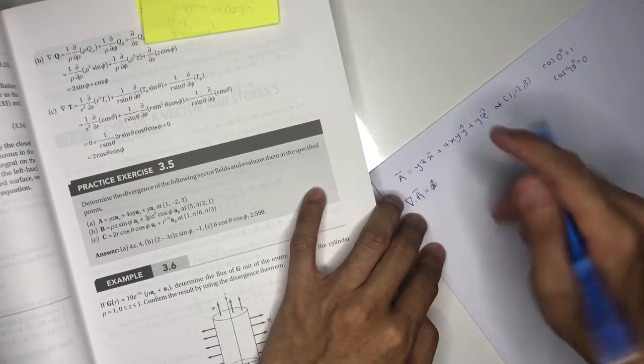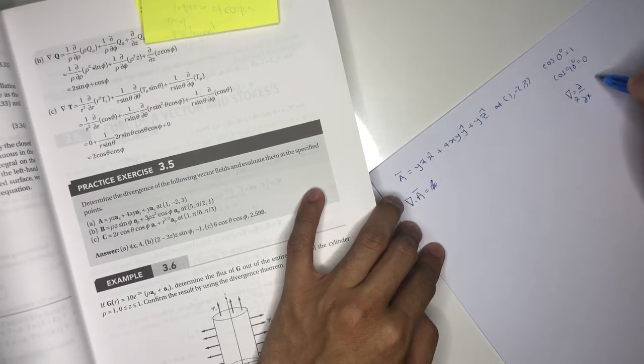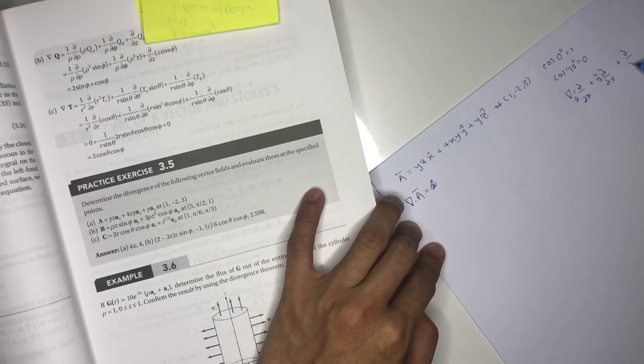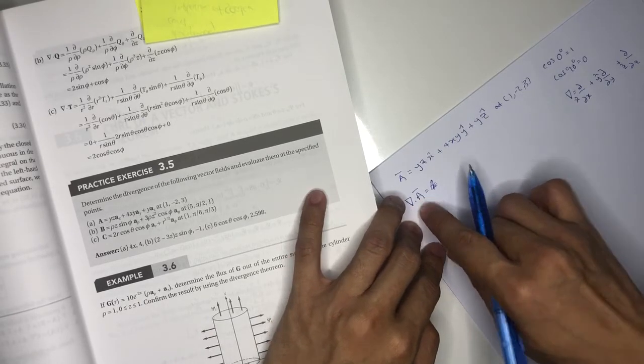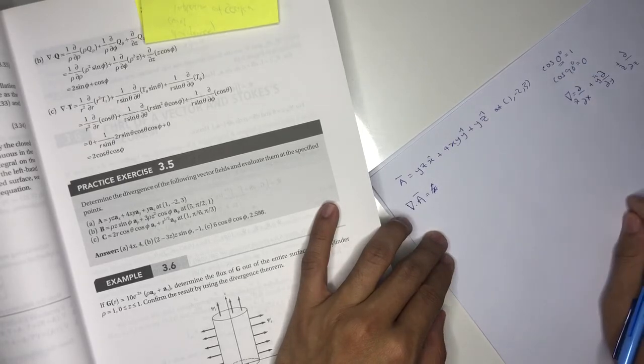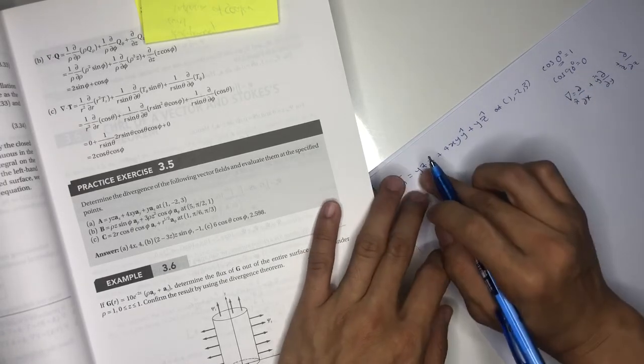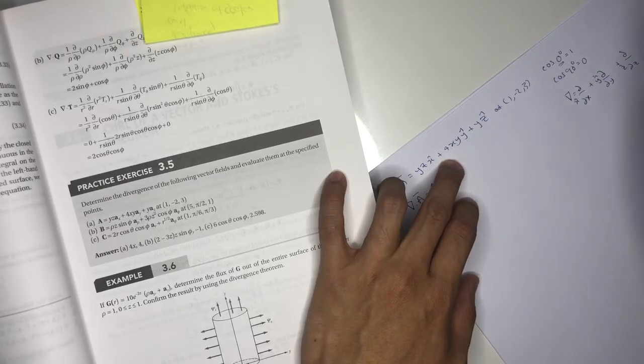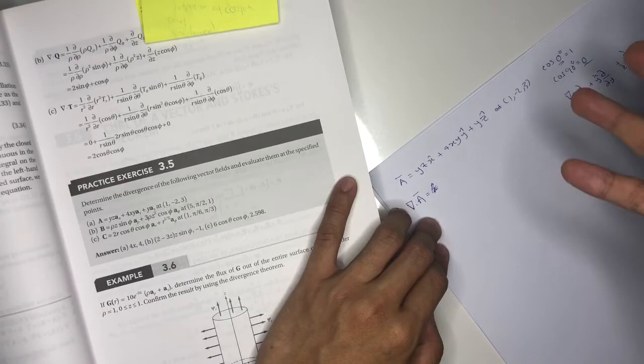First, we memorize that this is the del operator. When you have del dot vector, you only obtain the value for the components that are parallel. The same direction – d/dx in the x direction means you can only differentiate the x component with x. Because if they are orthogonal, for example dx with a y component, it will result in 0. This goes back to the definition of the dot product itself.